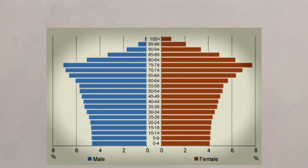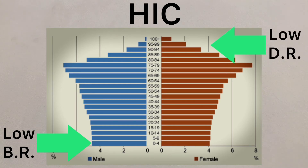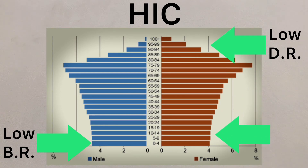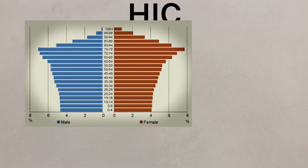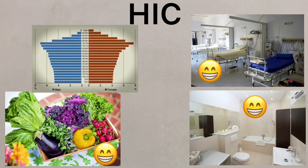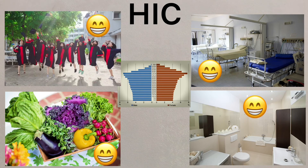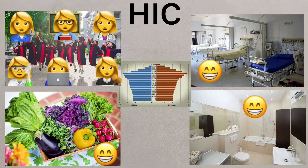This population pyramid indicates more of an HIC because the birth rate is low, as is the death rate, with many people living into older age. This also shows a declining birth rate, with each new year having fewer people than the last. This could indicate great healthcare, good diet and access to water and sanitation, as well as equality in education, where female students go on to have careers before embarking on having children.